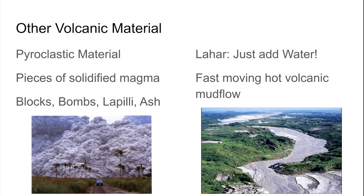In addition to lava, volcanoes can produce other types of material. The main type is pyroclastic material — pyro is Greek for fire, and clast means fragments. These fire fragments are classified by size; the general trend is the bigger they are, the slower their cooling time. There is also lahar, which happens when solidified magma pieces mix with water to create a very hot, fast-moving volcanic mud flow. Pyroclastic material and lahar can be very dangerous, rushing down the slope of a volcano at 120 kilometers per hour or more and colliding with structures.